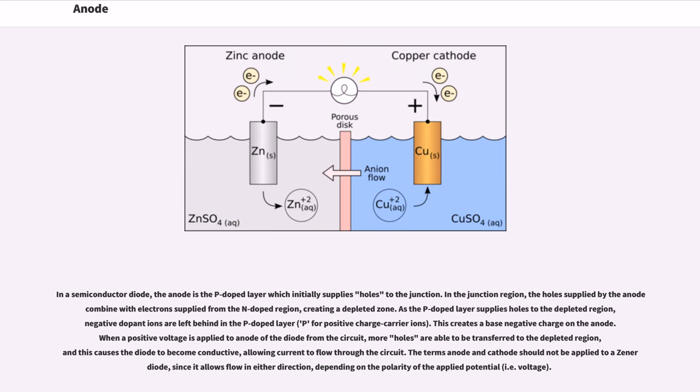In a semiconductor diode, the anode is the p-doped layer which initially supplies holes to the junction. In the junction region, the holes supplied by the anode combine with the electrons supplied from the n-doped region, creating a depleted zone. As the p-doped layer supplies holes to the depleted region, negative dopant ions are left behind in the p-doped layer (p for positive charge carrier ions). This creates a base negative charge on the anode. When a positive voltage is applied to anode of the diode from the circuit, more holes are able to be transferred to the depleted region, and this causes the diode to become conductive, allowing current to flow through the circuit.